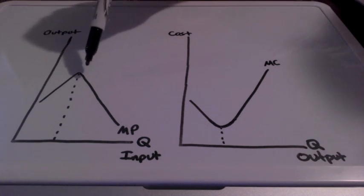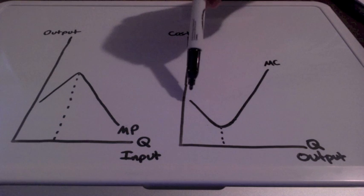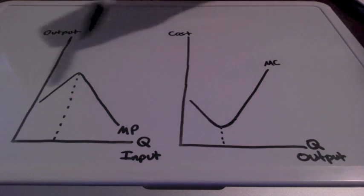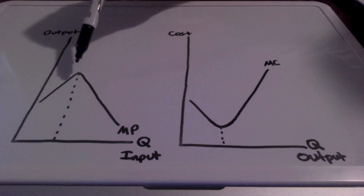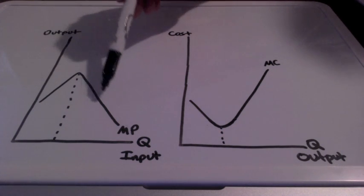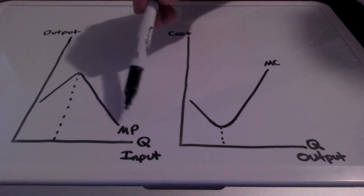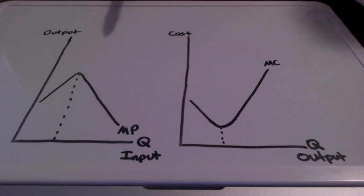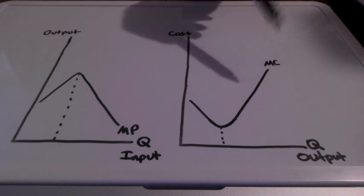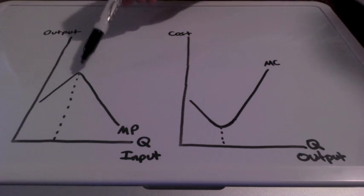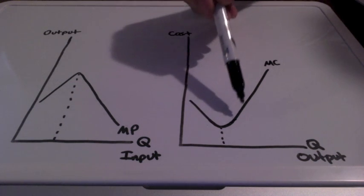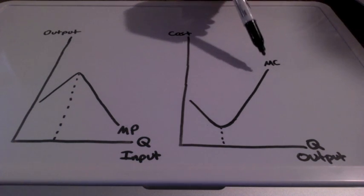So once again, when units are cheap, our costs will be low and our productivity will be high. When each worker adds less and less, the firm will still have to pay that worker their wage. So additional output is less, but the costs will continue to rise.